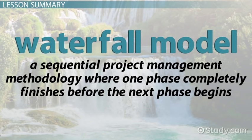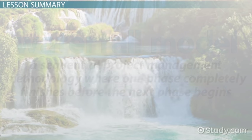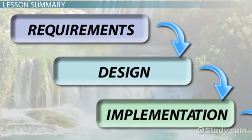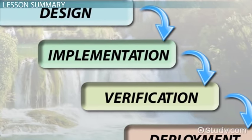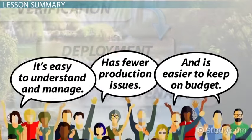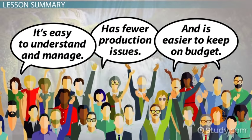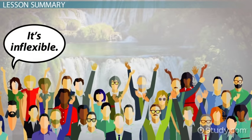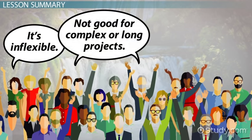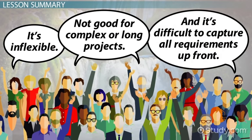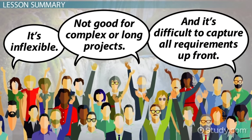The waterfall model is a sequential project management methodology where one phase completely finishes before the next phase begins. There are six phases in a simple waterfall model: requirements, design, implementation, verification, deployment, and maintenance. The waterfall method is easy to understand and manage, results in fewer production issues, and is easier to keep on budget. The disadvantages, however, are that it is inflexible, not suitable for complex or long-term projects, and it can be difficult to capture all requirements up front.